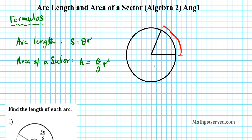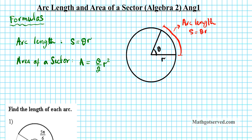So how do you compute that distance? Well, you just need to know what the angle is and what the radius of the circle is, and then you input it into this formula: S equals R theta, and that will be the arc length. So this distance right here is your arc length. The formula is S equals theta R.